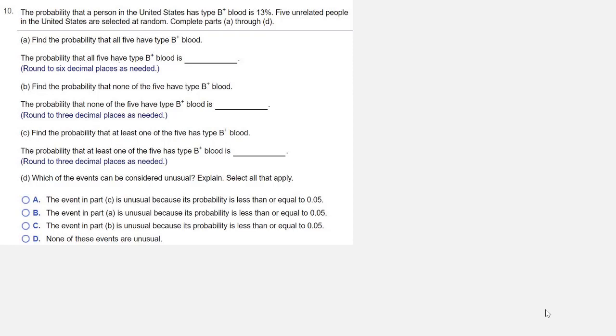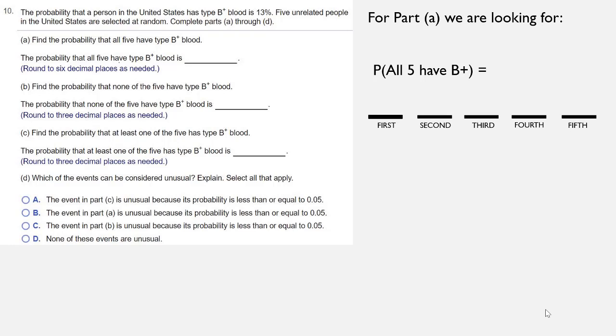All right, so we'll look at part A. Find the probability that all five have type B positive blood. We did a question in the notes about a cashier making mistakes, and this is very much like that. We're going to look at each one of the people as a slot to be filled in: first person, second person, third person, fourth person, fifth person.